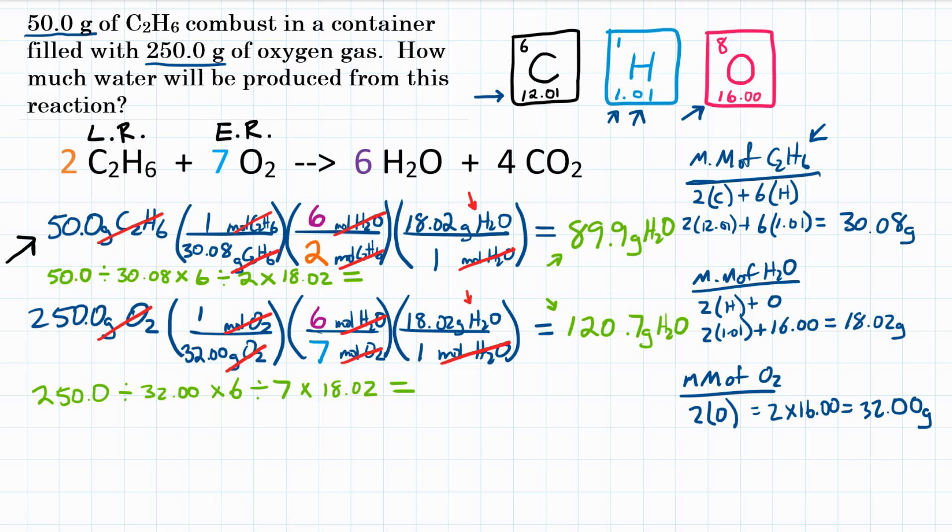So final answer. If 50 grams of C2H6 combust with 250 grams of oxygen, we will get 89.9 grams of H2O produced.